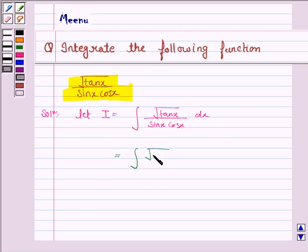This becomes root tan x into secant square x upon sin x cos x into secant square x dx.